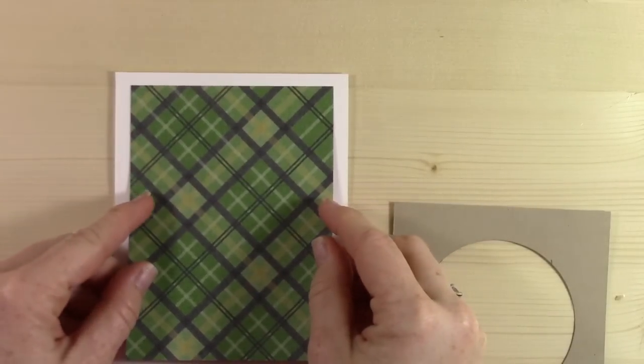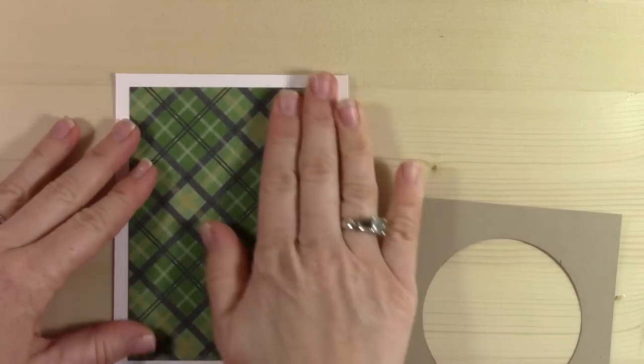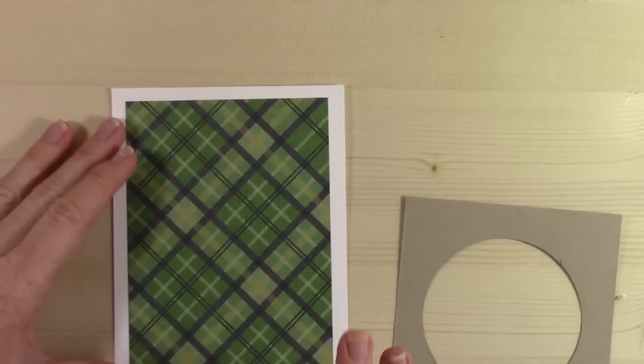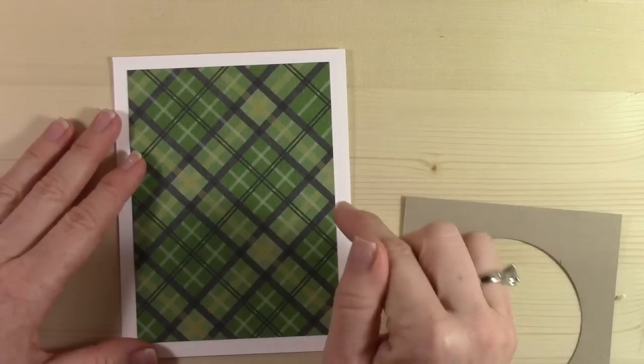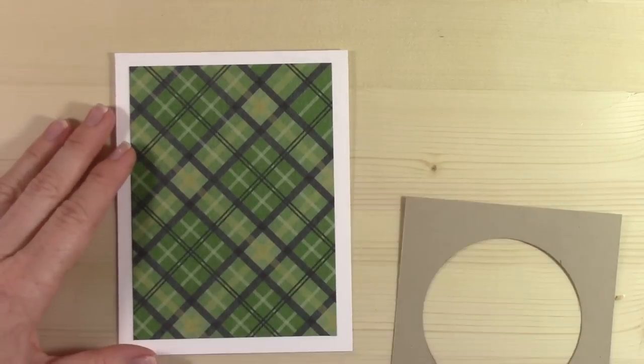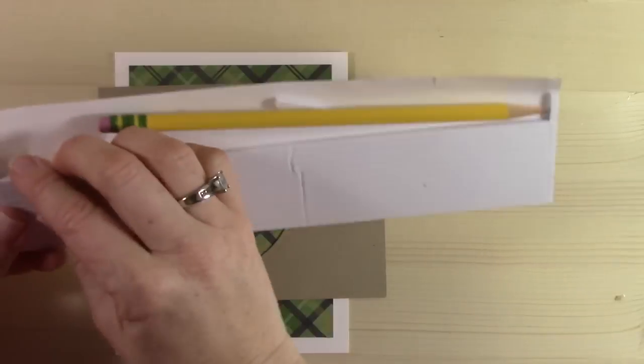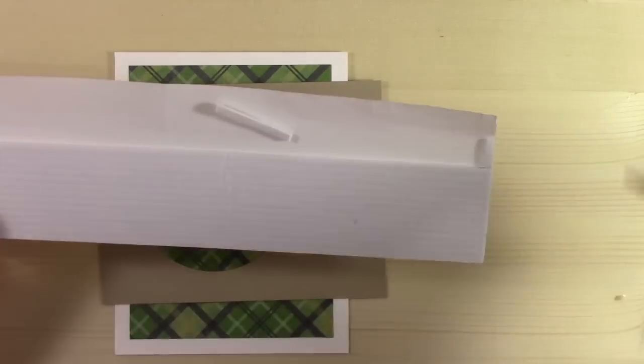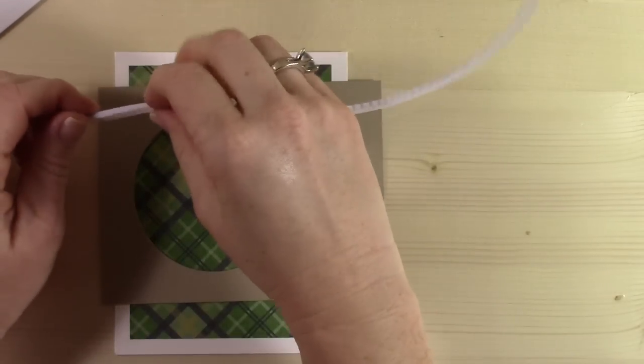I am a sucker for plaid. This piece is cut at three and three quarters by five inches. This is out of our Christmas paper stack. The name is escaping me, but you can always see all of the supplies that I use over on my blog. The link to my blog is always in the description below this video. On the back of here, that's some serious adhesive.